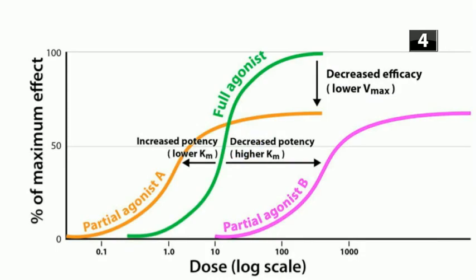Here, the green curve is the full agonist, and then the orange and pink curves are two different partial agonists. In each of these partial agonists, Vmax is lower, so efficacy is lower. But with partial agonist A, you're lowering KM and increasing potency. With partial agonist B, you have a higher KM, which means a decreased potency. So potency is an independent variable, but partial agonists always decrease efficacy.